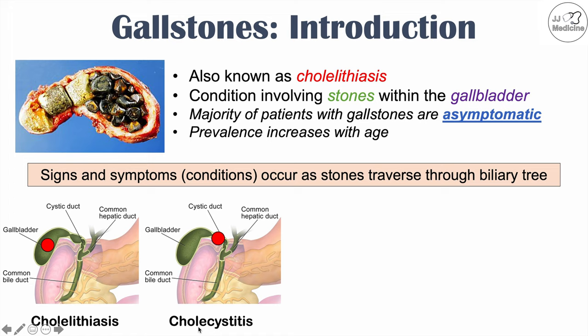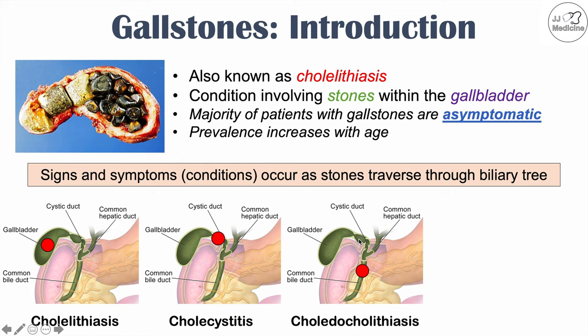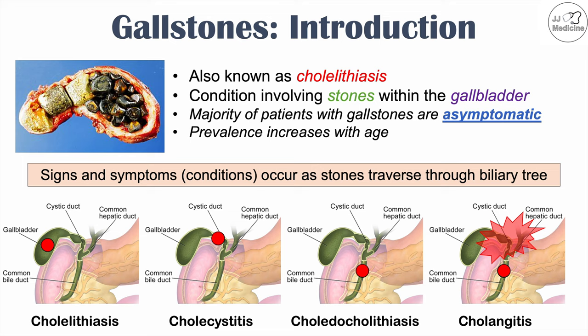If that stone continues to move through the biliary tree, it can eventually enter the common bile duct. Once it does, anything trying to be released — bile from the gallbladder or anything from the liver — will be blocked. We'll have inflammation of everything proximal to that stone: the gallbladder, parts of the biliary tree, and even the liver. If the stone remains in the common bile duct, bacteria can seed into that location, causing an infection called cholangitis, ascending cholangitis, or acute cholangitis.